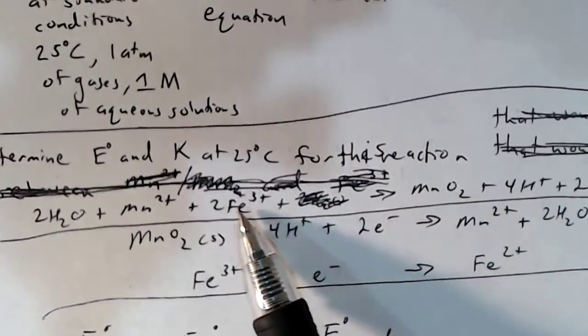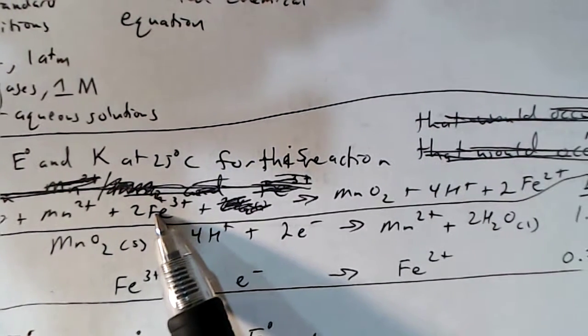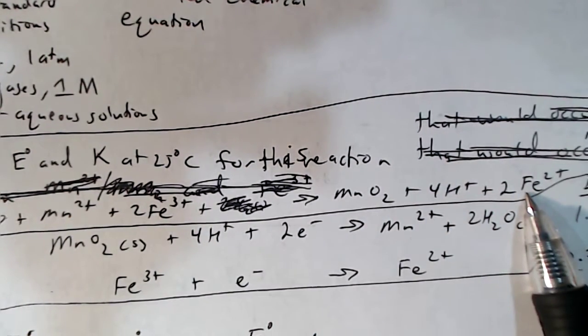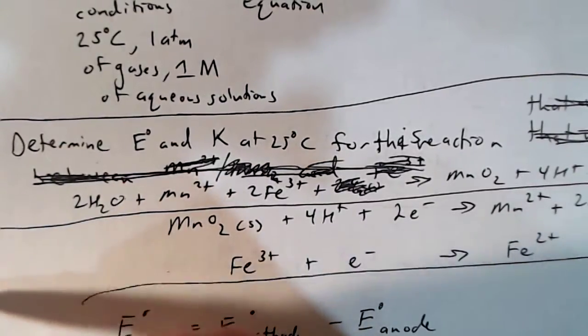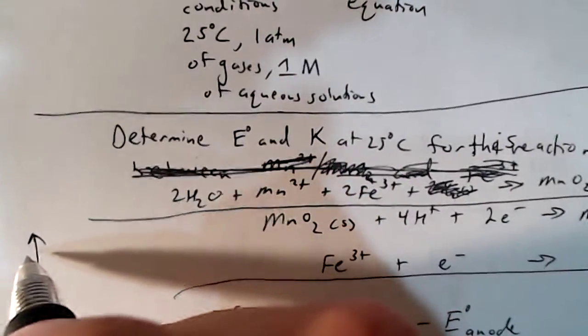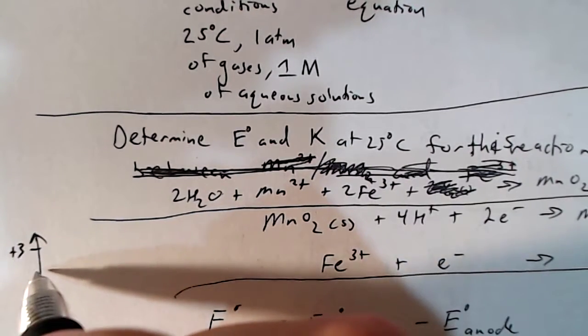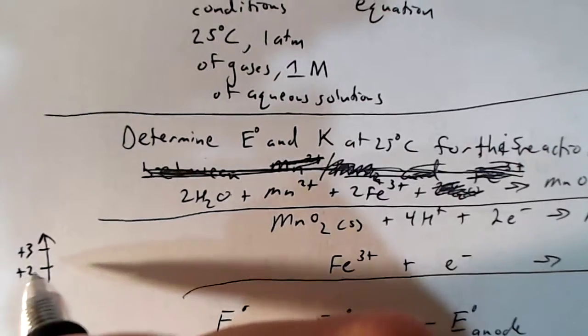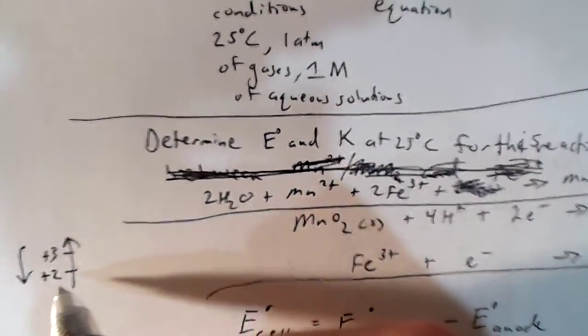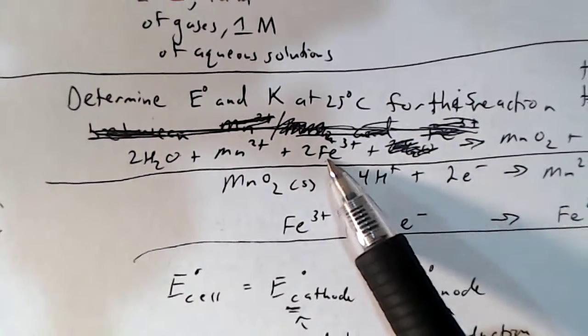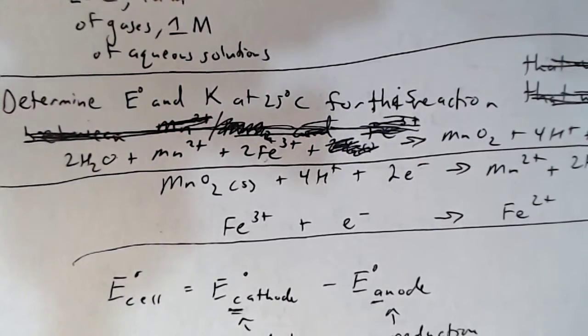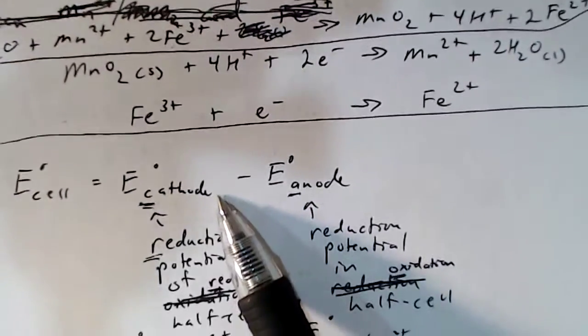Looking at the balanced chemical equation, we can see that Fe³⁺ is turning into Fe²⁺. There are no other atoms attached to the Fe, so the oxidation number of iron is starting out as +3 and ending up as +2. Going down in oxidation number is a reduction, so iron's reduction potential is going to be plugged in for the cathode.